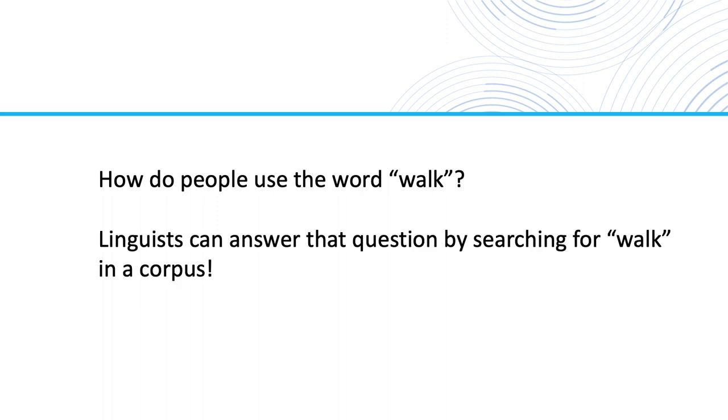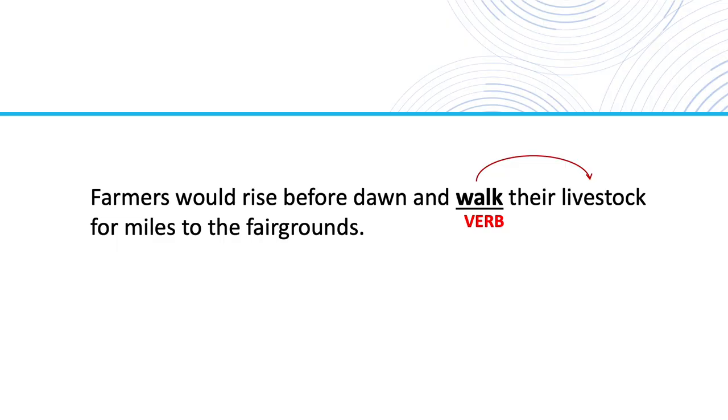Linguists can answer that question by searching for 'walk' in a corpus. In the corpus, they find examples that match the rule in the book — for example, 'students would either walk or arrive by horse.' But they also find examples that do not match the rule — for example, 'farmers would rise before dawn and walk their livestock for miles to the fairgrounds.' In this sentence, 'walk' is transitive: the farmers walk their livestock.